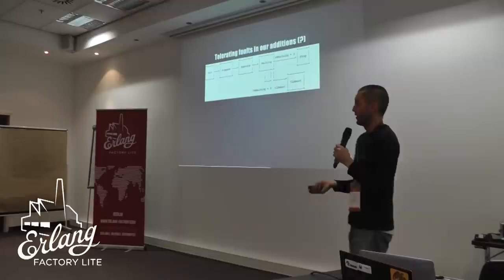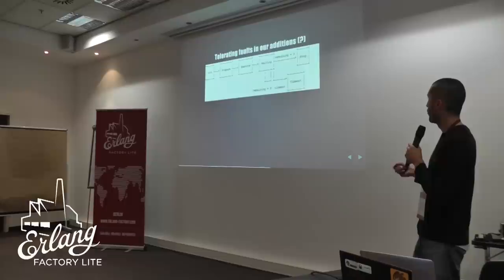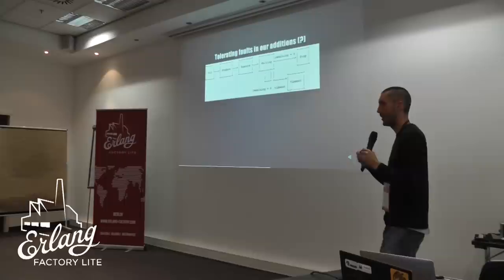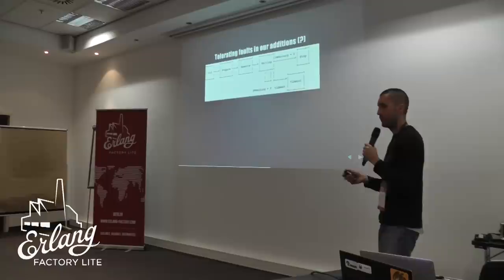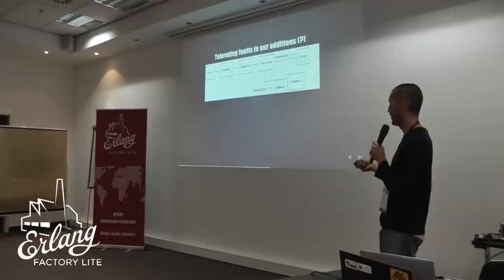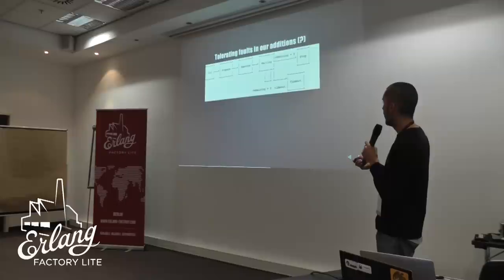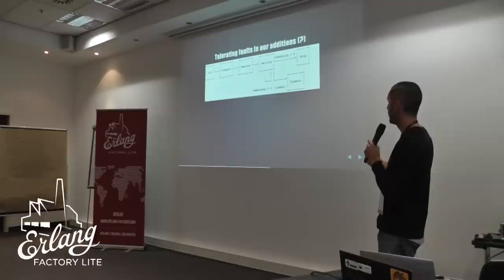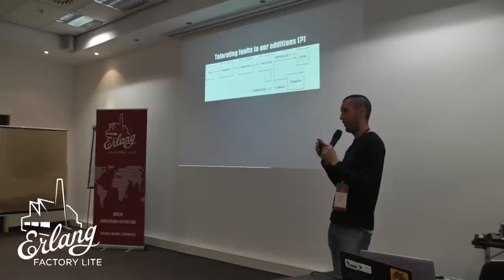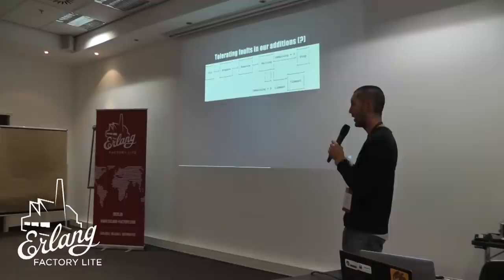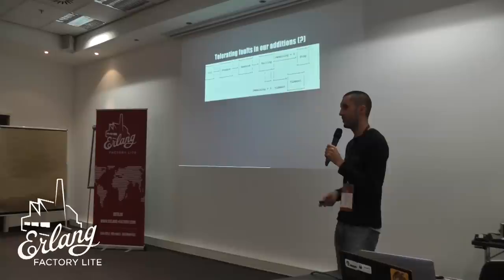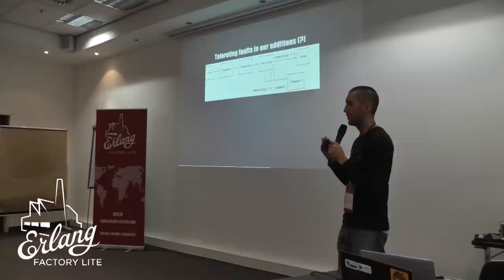Now we need to tolerate faults in our additions. We will do quorum-based reads and writes. For this we also use a finite state machine. The FSM starts on init, prepare, execute — it sends the command to all the nodes that must handle it. We tell the FSM to run the command on a certain number of nodes and reply when at least a threshold replies. For a write operation, you can say write to three different VNodes and consider it a success when one replies, or three and three. If timeout happens before the VNodes reply, you get a timeout.